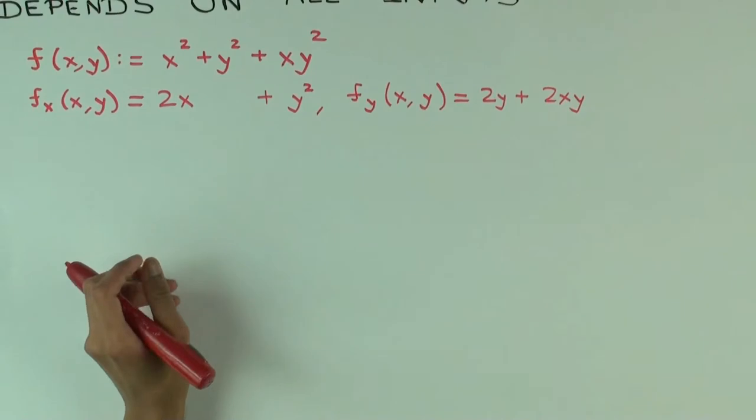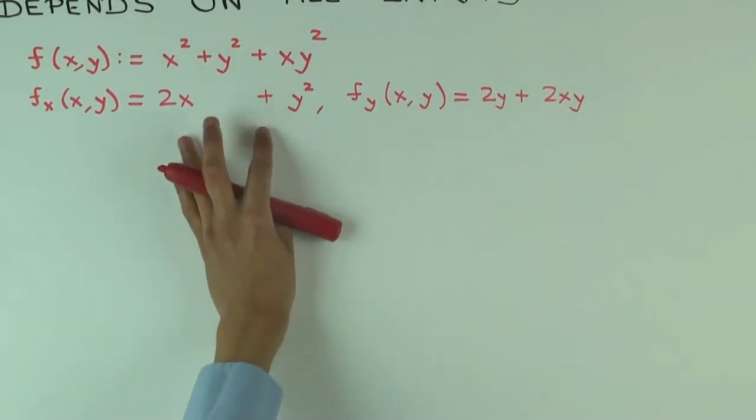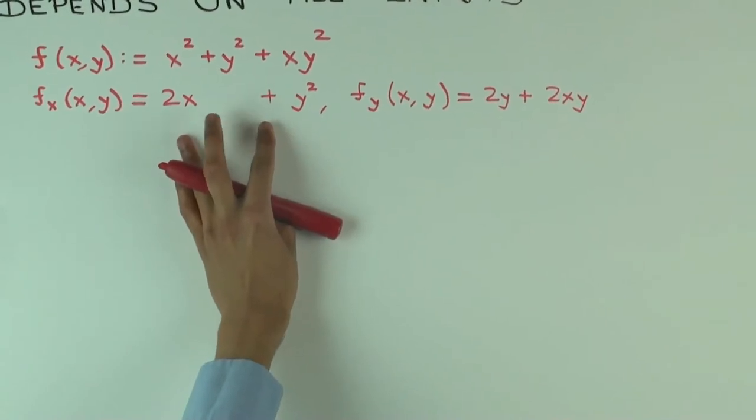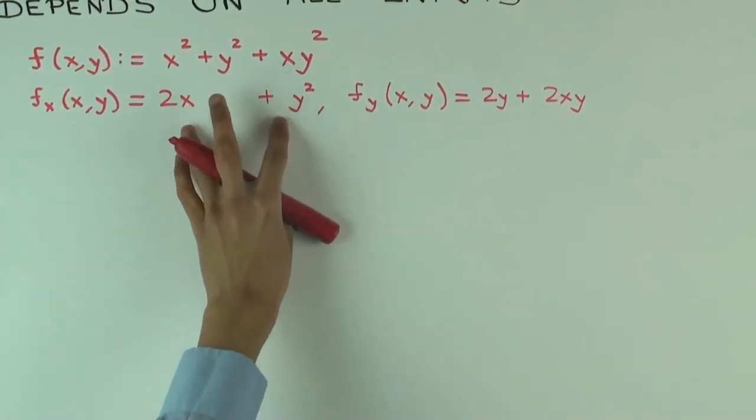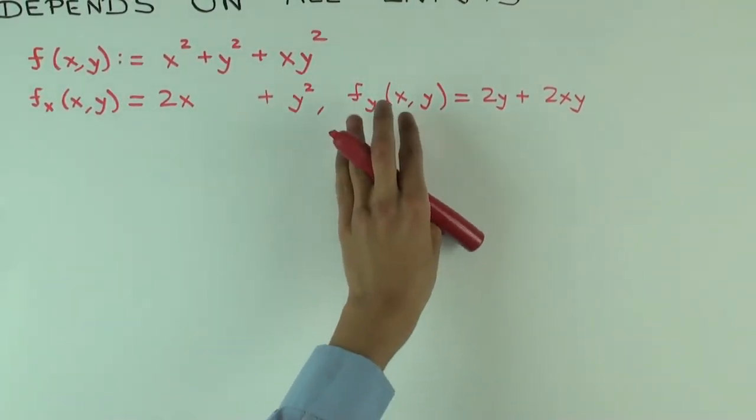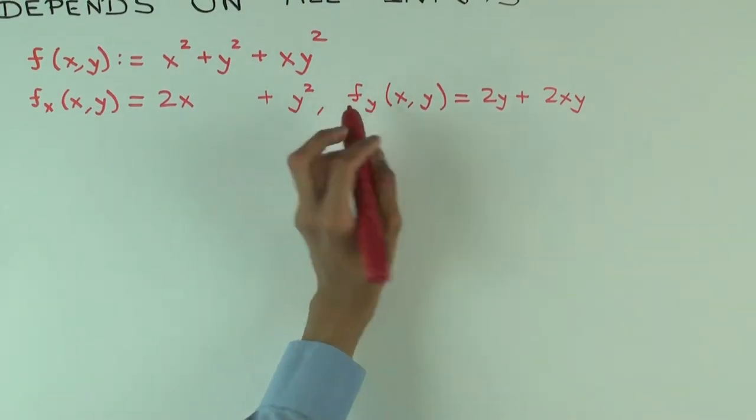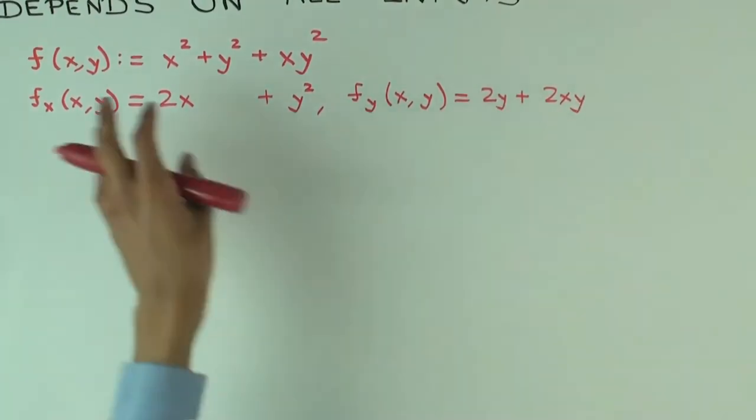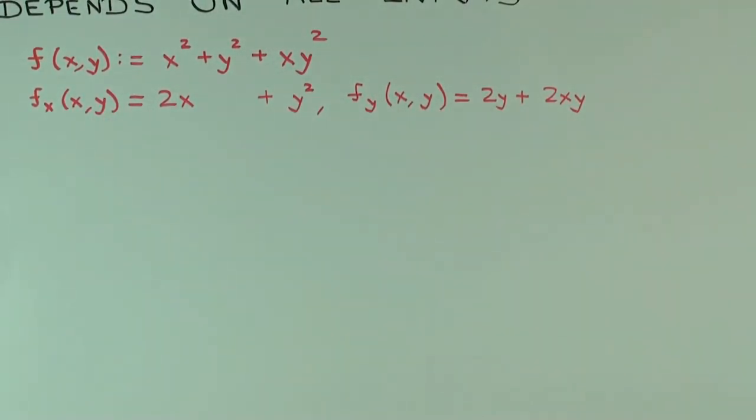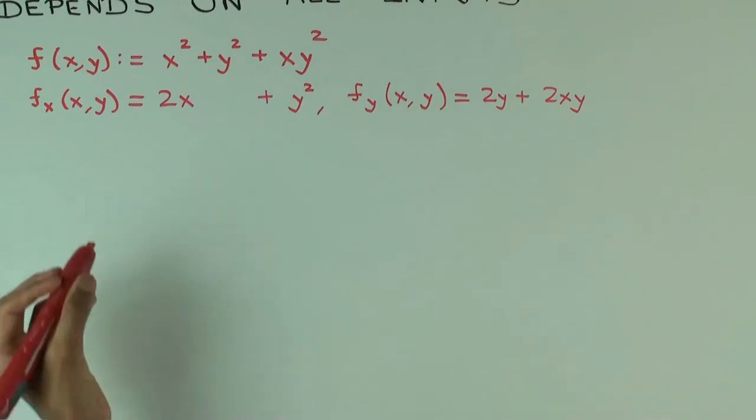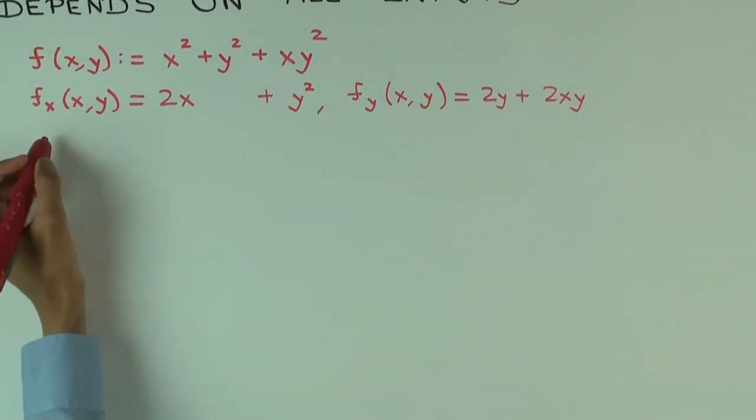Now, before we go on, we can already see what I was saying, which is that the expression for f sub x depends on both x and y. The expression for f sub y also depends on both x and y. So in some sense, we've already illustrated this, but I want to illustrate it with some numerical values, just to be concrete.